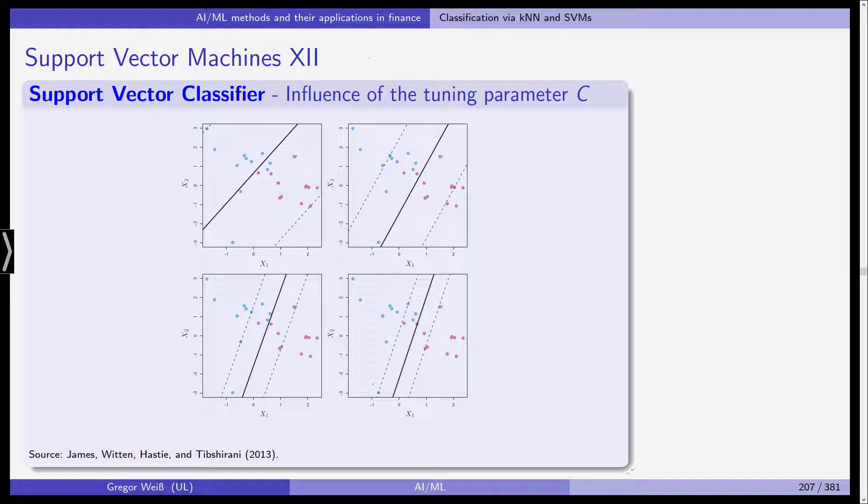And as c decreases, as we reduce the maximum allowed sum of errors, this tolerance for observations being on the wrong side of the hyperplane decreases and the margin narrows. So you can see this here. This is actually the margin on this side and on this side. And as you can see, it is reduced in each plot going from top left to bottom right.